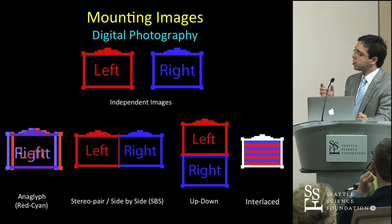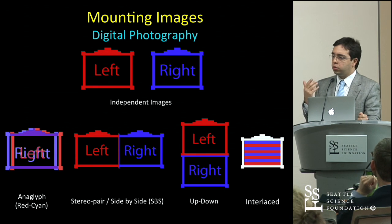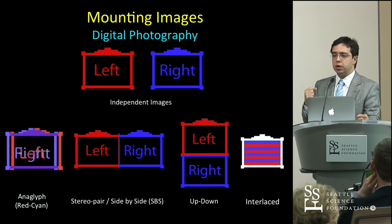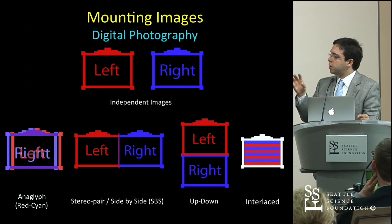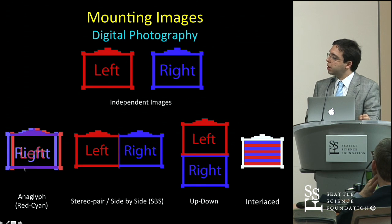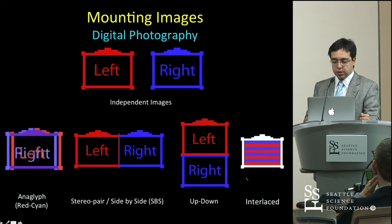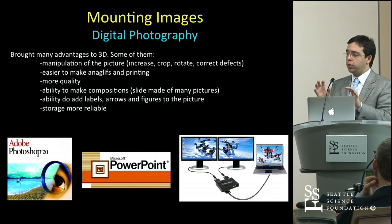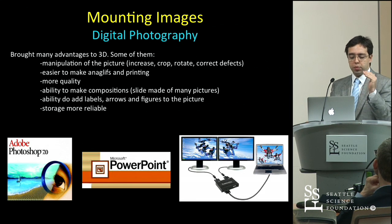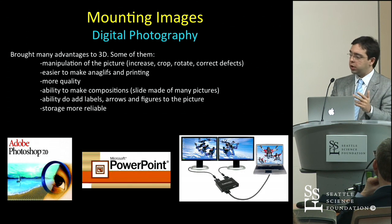After you get both images, the next question is how you're going to mount them. This depends on how you want to present them or what kind of software will read the image, since each software demands a certain way to mount it. You can keep them independent as left and right, put them together as anaglyphs, place them side by side, or use other formats. With digital photography, everything became much easier and higher quality — you can make compositions on one slide, add labels and arrows, and even make those arrows appear in 3D.